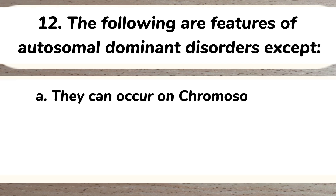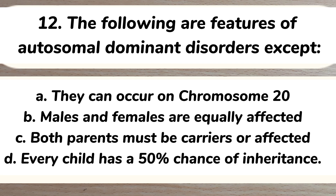Number twelve: the following are features of autosomal dominant disorders except: A) they can occur on chromosome 20, B) males and females are equally affected, C) both parents must be carriers or affected, D) every child has a 50% chance of inheritance. Answer: C) both parents must be carriers or affected.